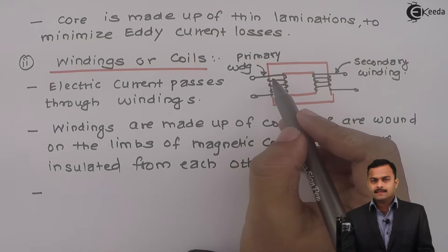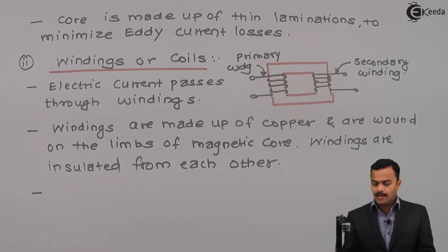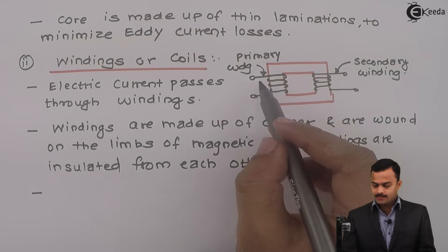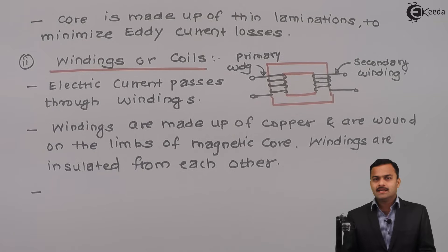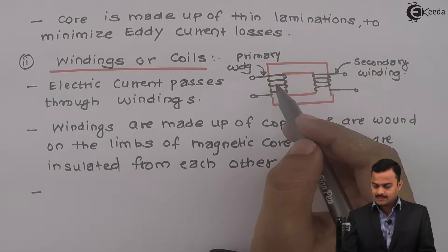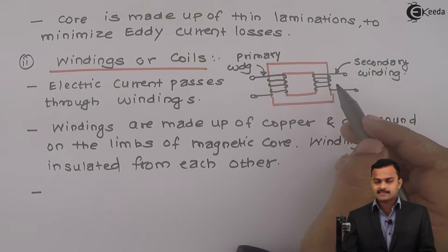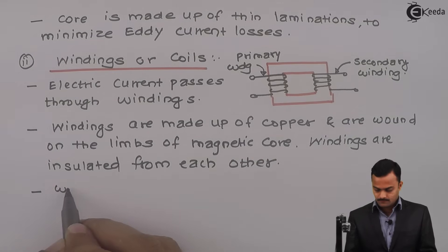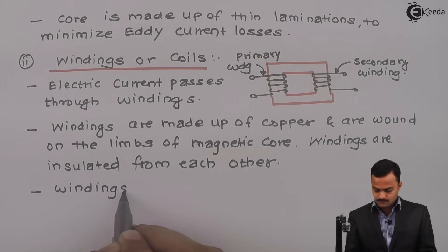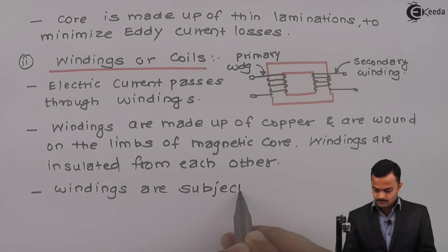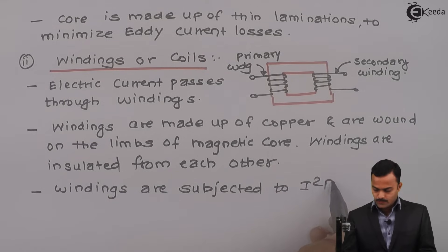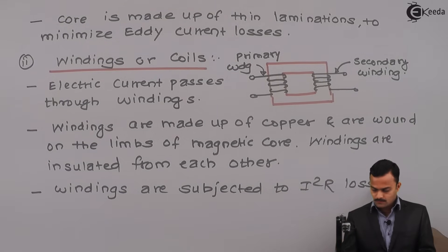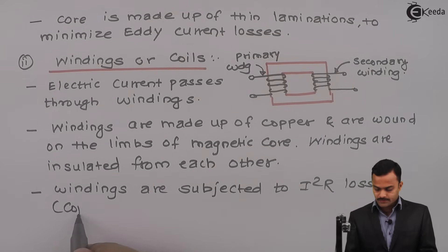Since there is a length, area of cross section and some resistivity for this material, hence there will be some resistance at the primary as well as secondary side. So current is passing through this resistance gives rise to I square R losses. So windings are subjected to I square R losses which are also called as copper losses.